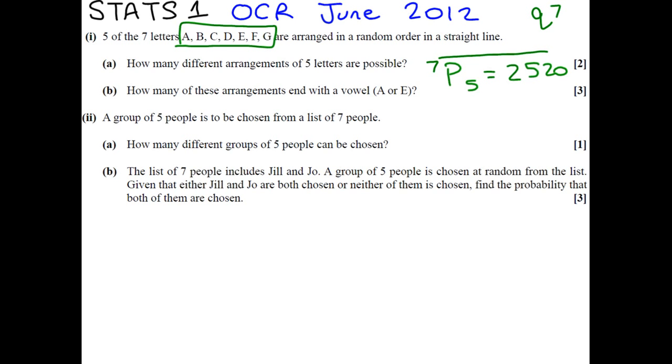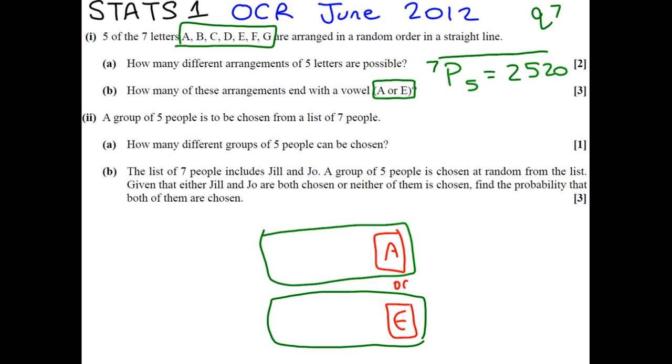How many of these arrangements end with a vowel? And in case you're not very good at English, it tells you what your vowels are, A and E. So, we're basically thinking about ways that we can end these 5 letters with either an A or an E. The way I want us to think about that is to say, well...